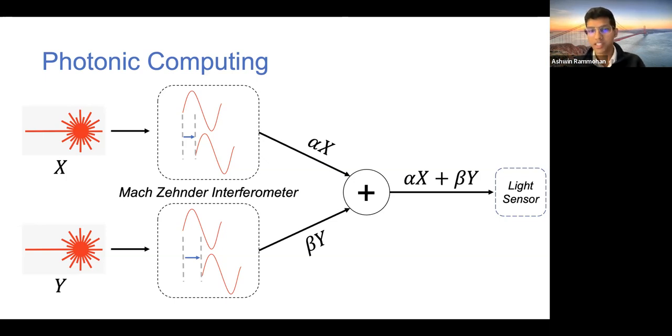Then after weighting these light quantities, we can then just simply combine them together using just normal mirrors and other optical contraptions to add them together. And then finally, we'll have an added and multiplied light source that we can then pass into a sensor to decode into some digital and numerical value.